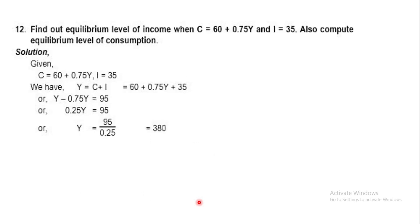Question 12: Find the equilibrium level of income when C = 60 + 0.75Y and I = 35; also compute the equilibrium level of consumption. Y = C + I, so Y minus 0.75Y = 60 + 35 = 95. Therefore 0.25Y = 95, giving Y = 95 upon 0.25 = 380.